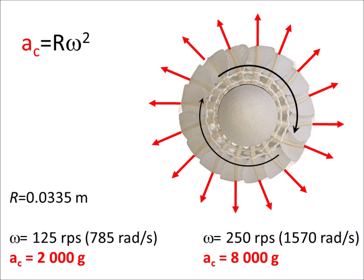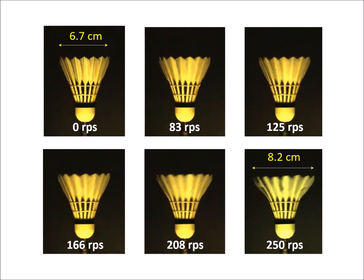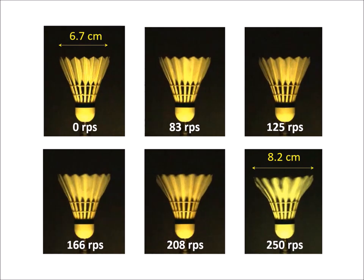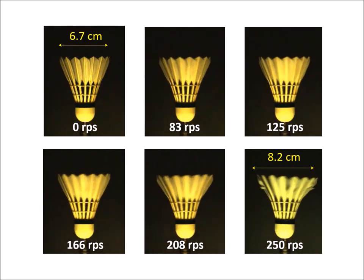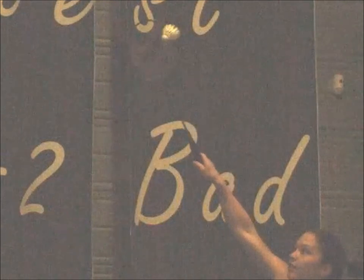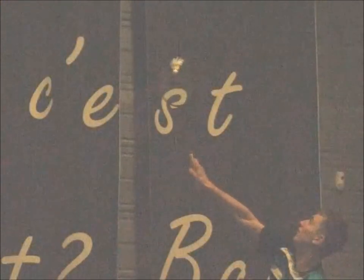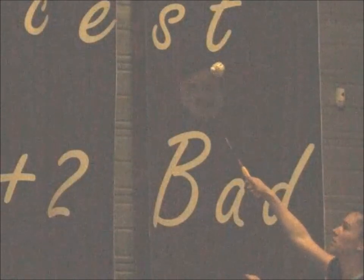At 250 rotations per second, the centrifugal acceleration reaches 8000G. Here we can see that the diameter of the shuttlecock is 6.7 cm at rest, and it expands above 8 cm under high spinning rate. Here again, the deformation due to angular acceleration is transient, and the shuttlecock rapidly recovers its original shape.